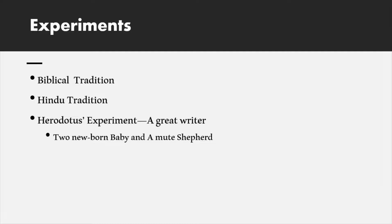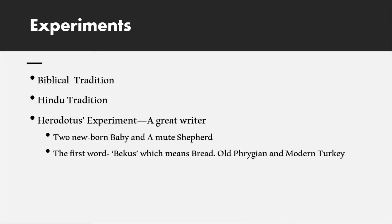The results were shocking. The children were reported to utter not an Egyptian word, but a word pronounced 'bekos,' meaning 'bread' — a word from the language of the region known as ancient Phrygia, in modern-day Turkey. This was very surprising, suggesting that the original language had some kind of root in that region.